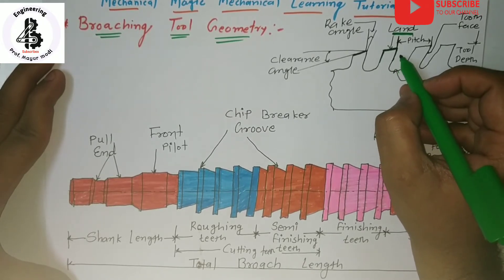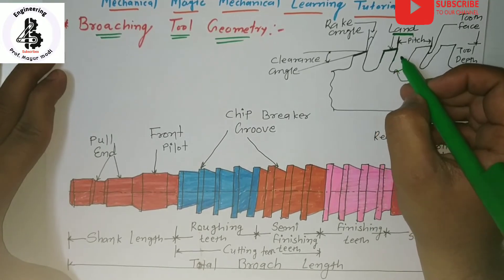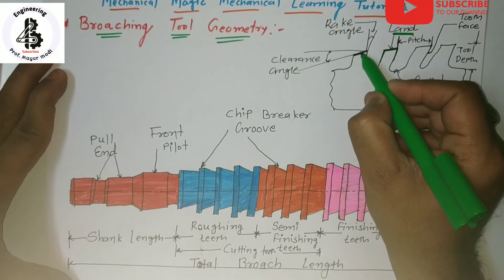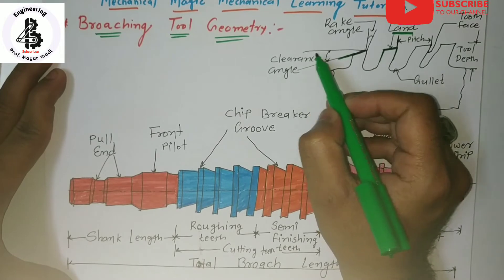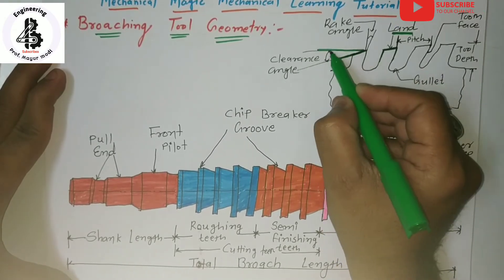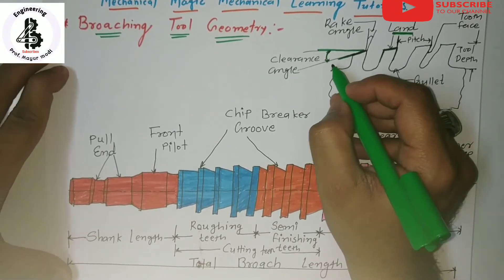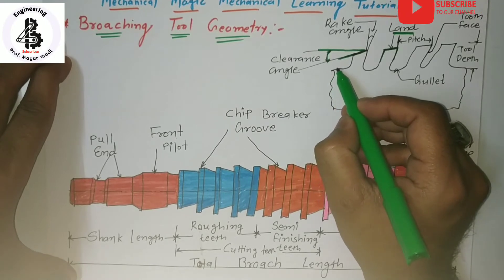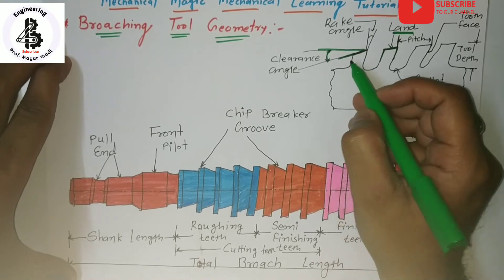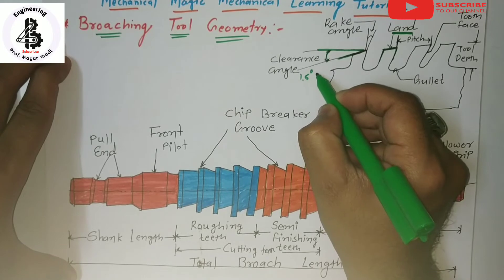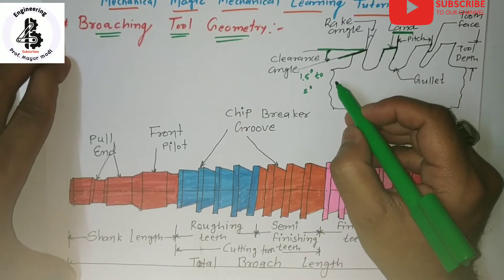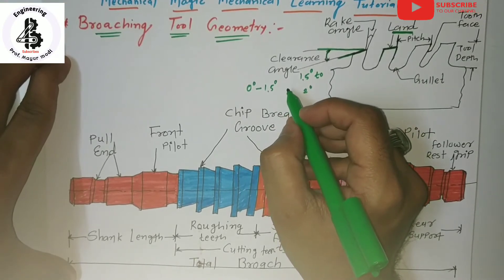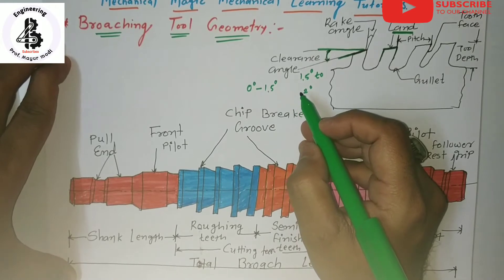The second important part is the clearance angle. The angle with the horizontal represents the clearance angle. In the case of a single point cutting tool, the land of the broach should not be ground because it changes the size of the tool. Generally the clearance angle is from 1.5 to 2 degrees for roughing teeth, or 0 to 1.5 degrees for finishing teeth.